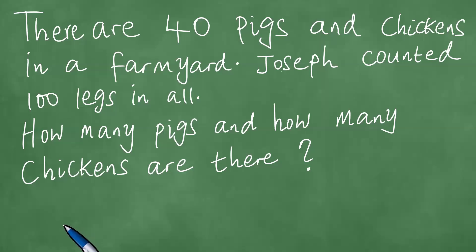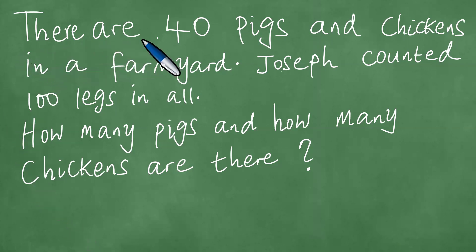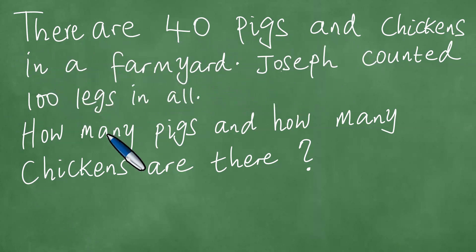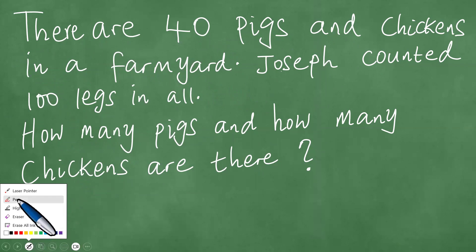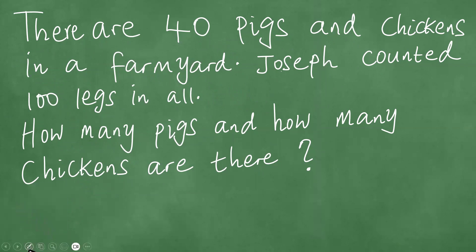In this lesson, we shall be solving this word problem in front of us. There are 40 pigs and chickens in a farmyard. Joseph counted 100 legs in all. How many pigs and how many chickens are there? We solve this particular word problem step by step as follows.